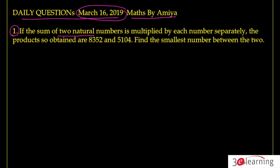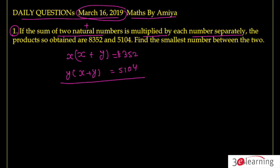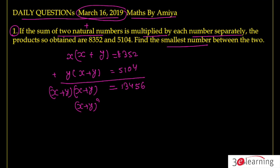Question number one: the sum of two natural numbers (positive numbers) is multiplied by each number separately. Say the numbers are x and y. The sum is multiplied by x and then by y, giving us products 8352 and 5100. Adding both equations, we take (x + y) common, and we get (x + y)² = 13456, so x + y = 116.